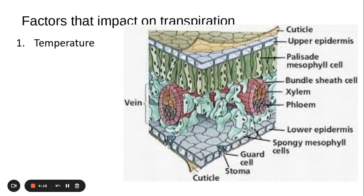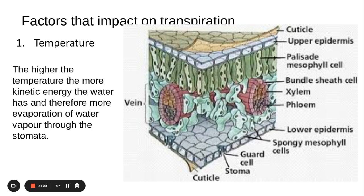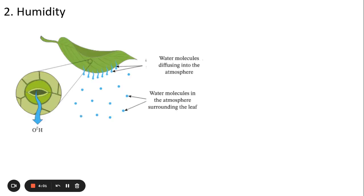We need to know factors that can impact upon transpiration, which is the evaporation of water from a leaf. First one is temperature. The higher the temperature, the higher the kinetic energy, and therefore more water will leave the plant through evaporation through the stomata.